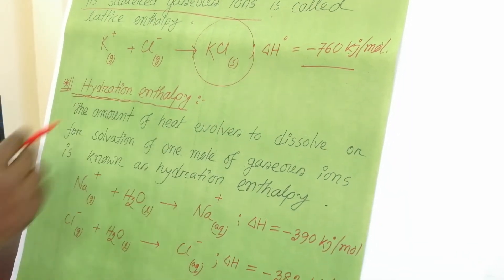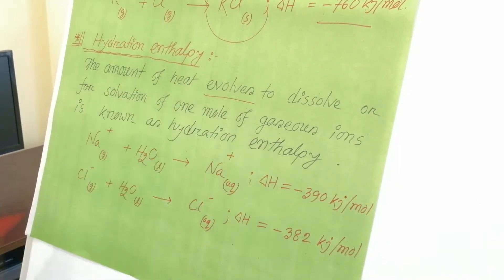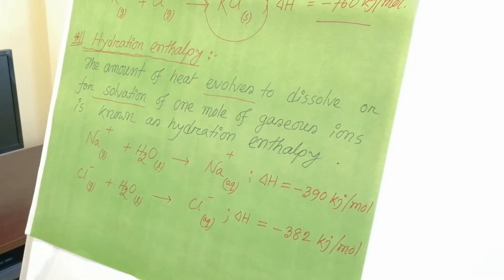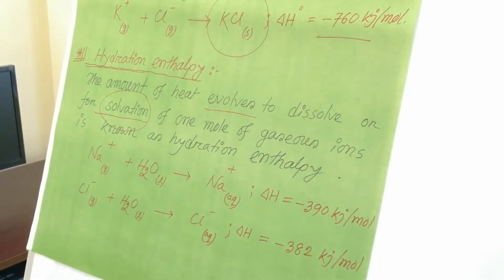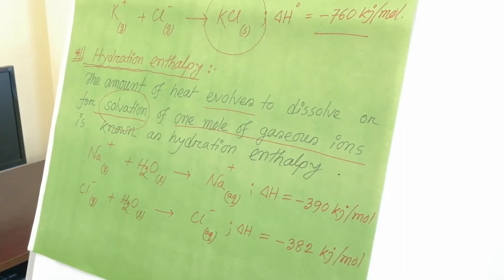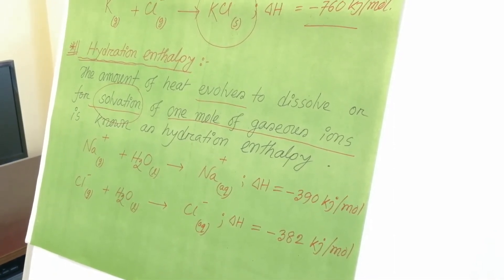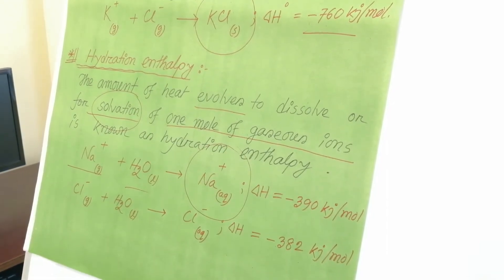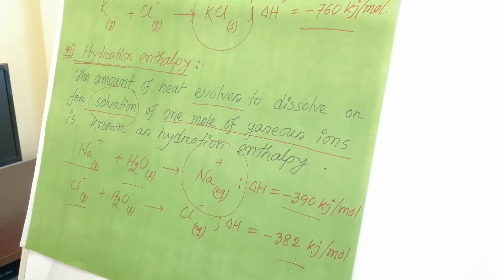The next content is hydration enthalpy. Hydration enthalpy is the amount of heat evolved when one mole of gaseous ions is dissolved or solvated — surrounded by water molecules. For example, the hydration enthalpy of sodium ion is minus 390 kJ per mole, and for chloride ion it is minus 382 kJ per mole.